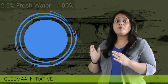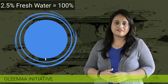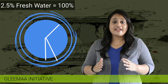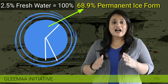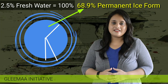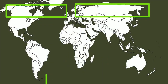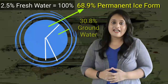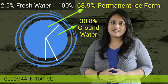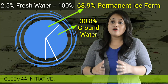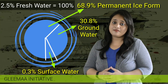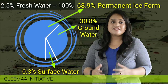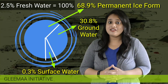Within this 2.5% of fresh water, 68.9% is totally covered with permanent ice forms — that is, in the Arctic, Antarctic, and in mountain glaciers. And 30.8% is found in groundwater. And only 0.3% can be found in lakes, reservoirs, and in streams.